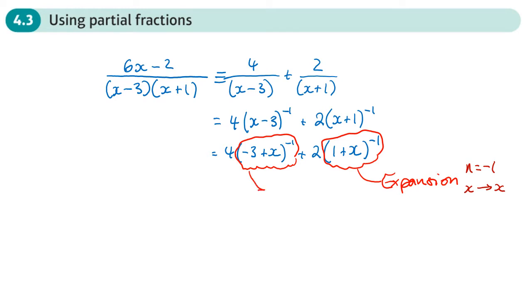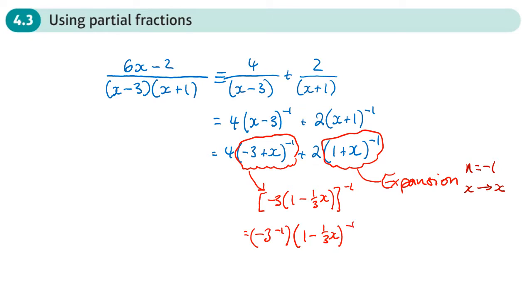The first term we need to factorize first — take out the negative three — giving us one minus a third x, all to the power negative one. That gives us negative three to the power negative one, multiplied by (1 minus one-third x) to the negative one. In the expansion, n is negative one and wherever we see x we put negative one-third.